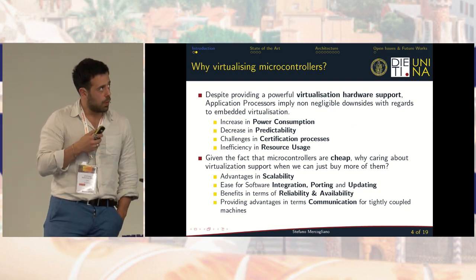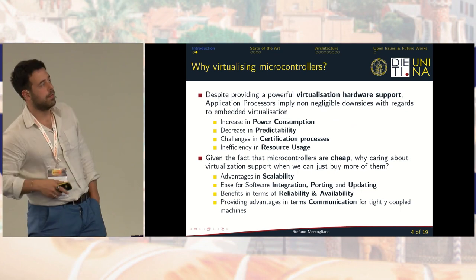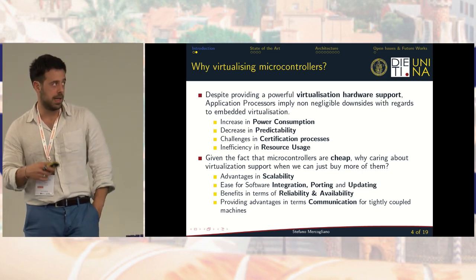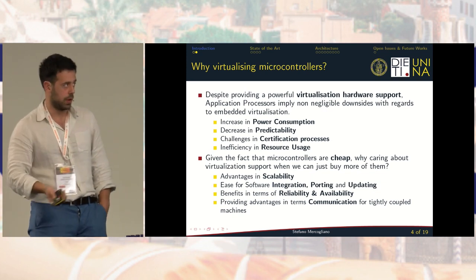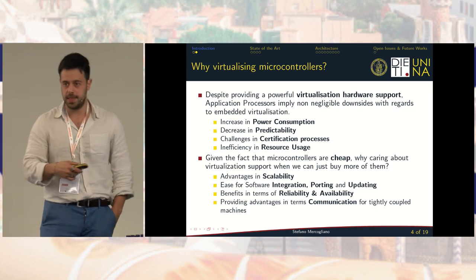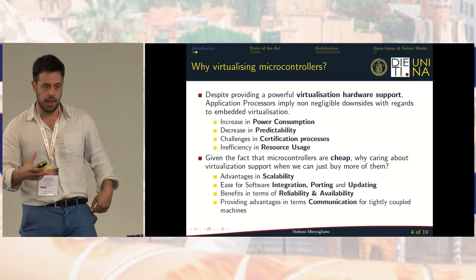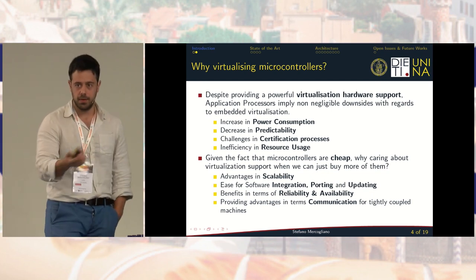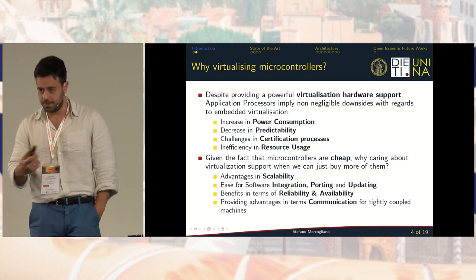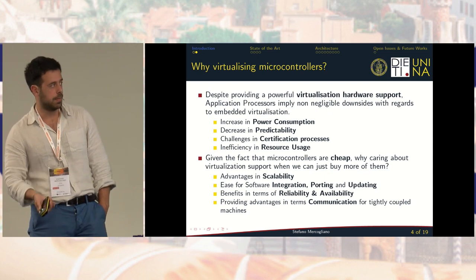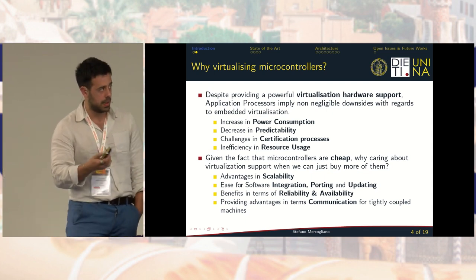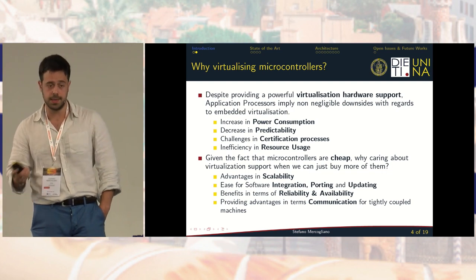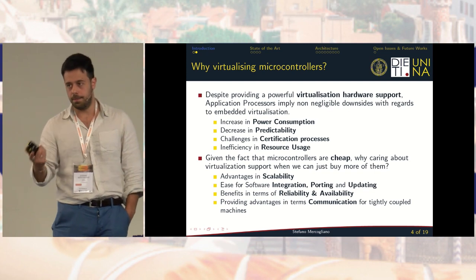Why virtualizing microcontrollers? Despite providing powerful virtualization hardware support, application processors have non-negligible downsides. For example, there is an increase in power consumption because they have a larger area and more on-chip components such as multiple levels of caches, an out-of-order pipeline, branch predictors, and TLBs. All of that increases power consumption but also decreases predictability, leading to challenges in the certification process. You can disable some of those, but then you have inefficiency in resource usage and they still consume static power.